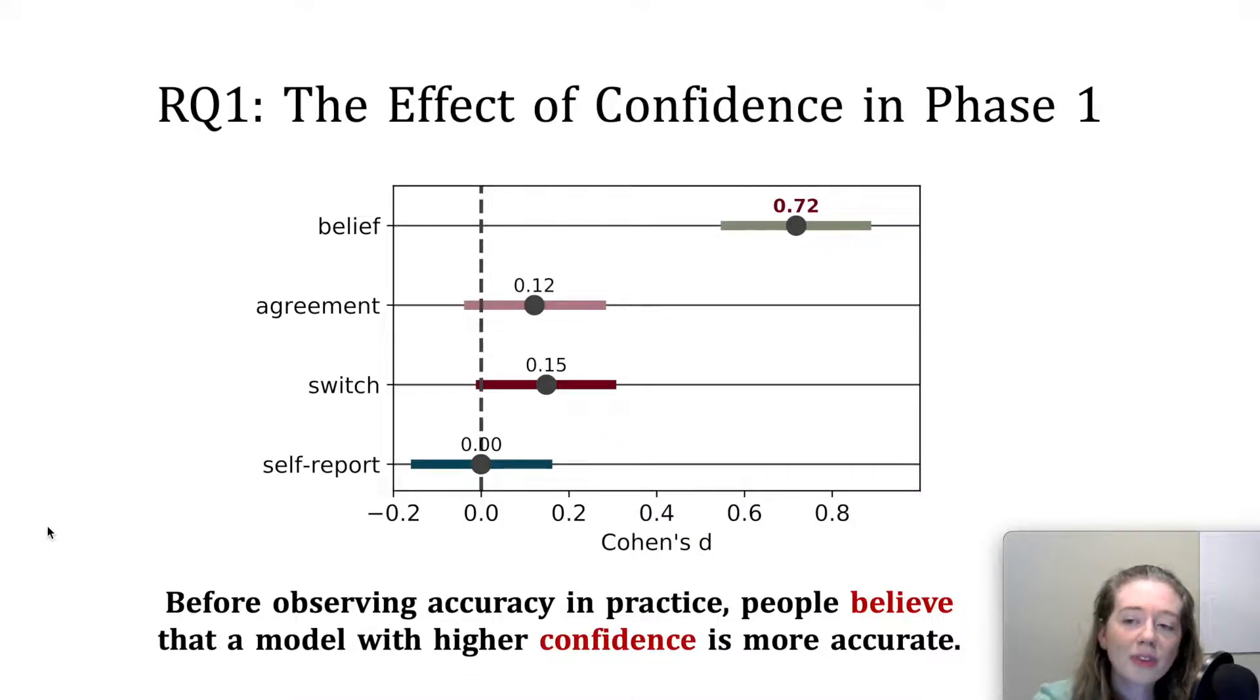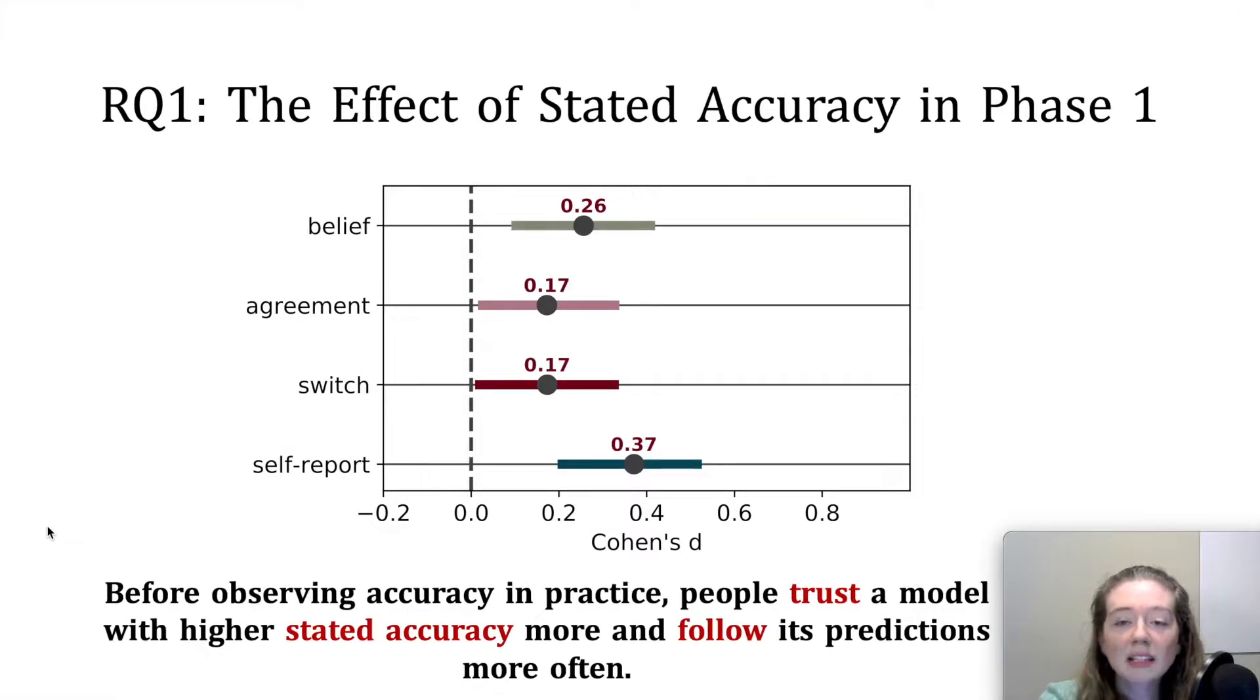Looking at the effect of confidence in phase one, the results suggest that before observing a machine learning model's accuracy in practice, people believe that a model with a high confidence score is more accurate. But we found no other significant effect on the other three measures of trust. In contrast, for the effect of stated accuracy in phase one, we find that people not only believe that a model with a high stated accuracy is more accurate, but they follow its predictions more frequently and they self-report to have greater trust in it.